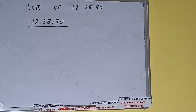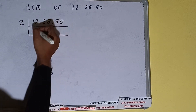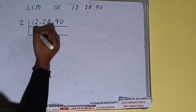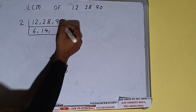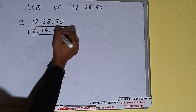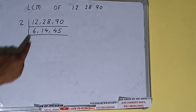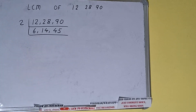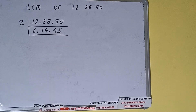If we check, all three numbers can be divided by 2. So we'll divide. The first number will become 6 on dividing, this will become 14 on dividing, and this will become 45. Now again if we check, the first number is divisible by 2, the second number is divisible by 2, but the third number is not divisible by 2.